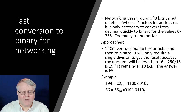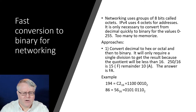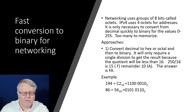Networking uses octets — groups of eight bits. IPv4 uses four octets for addresses, masks, and so forth, so we often need to move from decimal to binary. An 8-bit value ranges from 0 to 255, which is too many to memorize. One approach is to convert decimal to hex first and then back out to binary. Since 8 bits is exactly two hex digits, you only need to do a single division — the quotient is guaranteed to be less than 16. To convert 250 to binary, divide by 16: the quotient is 15 and the remainder is 10.